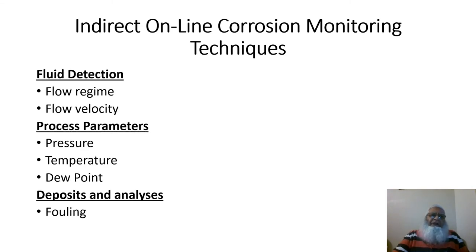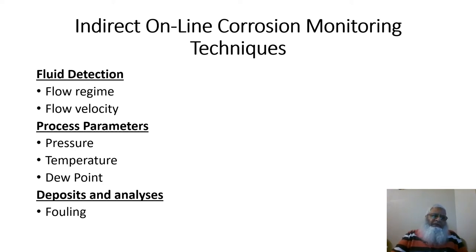Continuing the indirect online corrosion monitoring techniques: fluid-based techniques include flow regime — turbulent or laminar flow — and flow velocity, which is very important in controlling the rate of corrosion. Process parameters include pressure, temperature, and dew point. Deposits and analysis refers to fouling deposits and their analysis, which is important for understanding what has happened and what is likely to happen in the system.